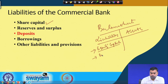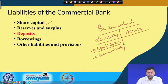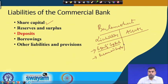Then we have reserves and surplus. Why are reserves and surplus considered a liability? Because reserves and surplus do not provide any kind of return — they are always kept within the organization for contingency reasons. That is why this is also considered a liability for the bank.